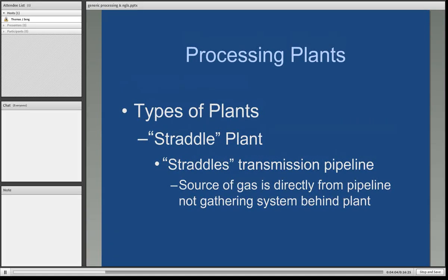Another type of plant is known as a straddle plant. This is one that merely straddles the transmission pipeline itself, extracts natural gas from the pipeline, processes it, and then re-delivers the gas to the processing plant itself. It does not have natural gas wells gathered behind it.